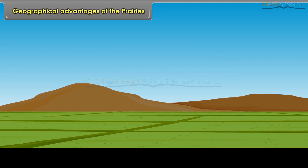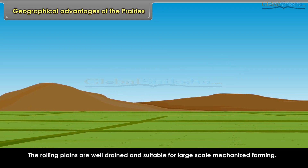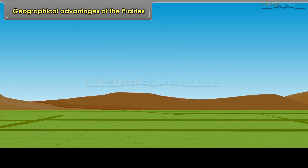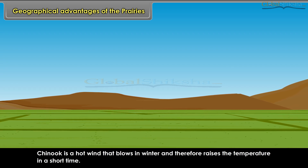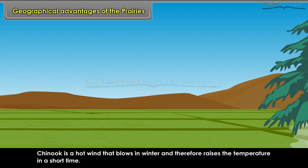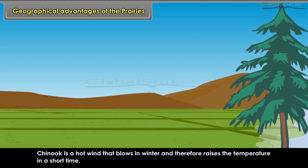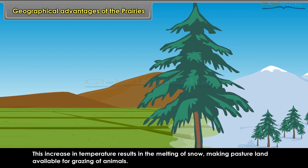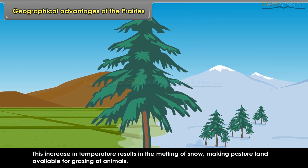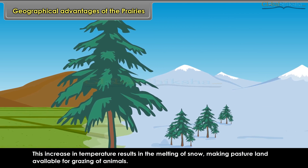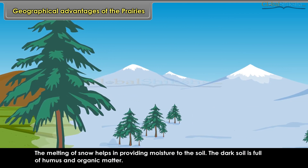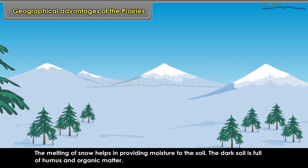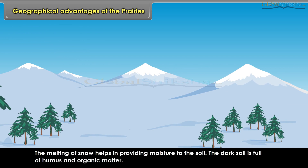The rolling plains are well-drained and suitable for large-scale mechanized farming. Chinook is a hot wind that blows in winter and raises the temperature in a short time. This increase in temperature results in the melting of snow, making pasture land available for grazing of animals. The melting of snow also provides moisture to the soil. The dark soil is full of humus and organic matter.